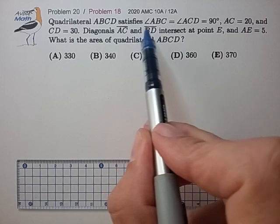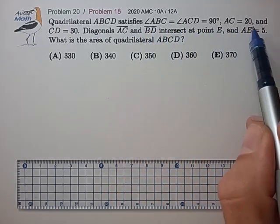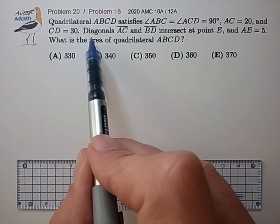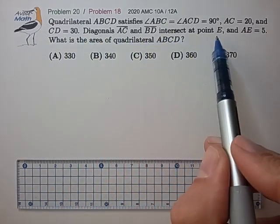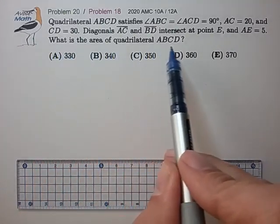Quadrilateral ABCD satisfies right angles at ABC and ACD. AC is length 20, CD is length 30. The two diagonals intersect at point E such that AE is 5. What is the area of the quadrilateral?